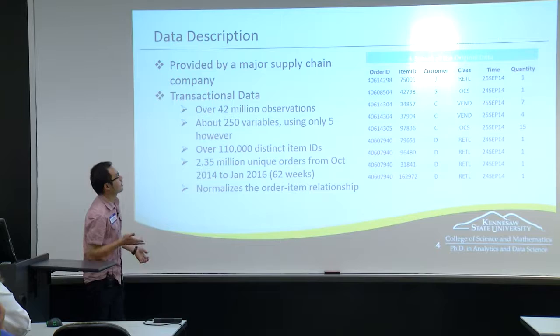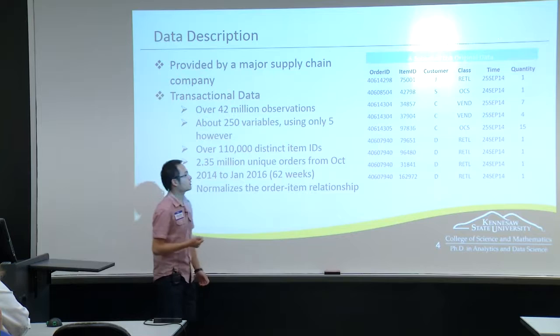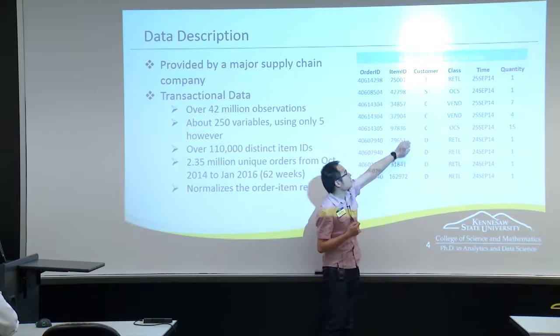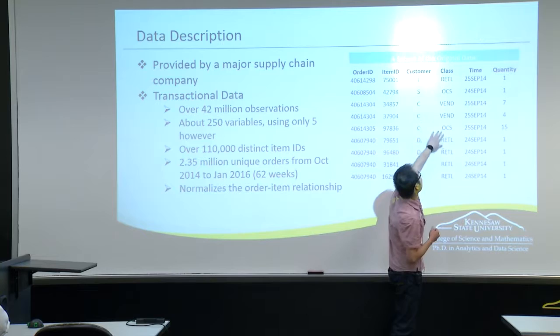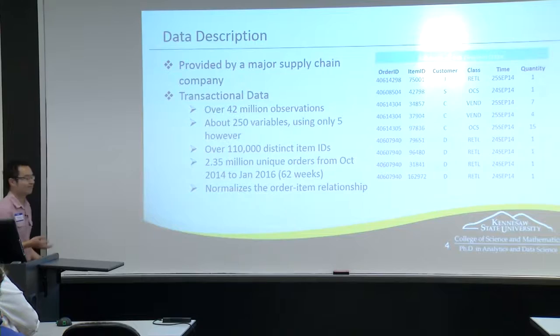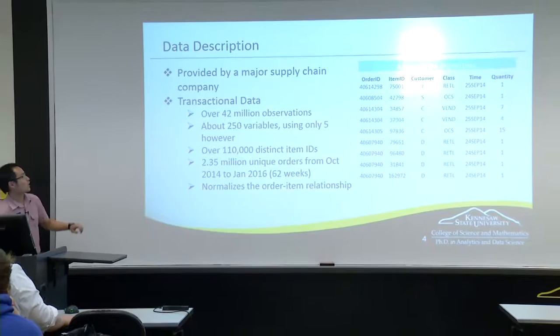A little about the data: it was provided by the client. It has about 42 million observations from 2014 to January 2016. The most important variables are the order ID, which represents one order from a customer; item ID, which represents one unique item; the customer name, which I had to hide; the class such as retailer or vendor; the time; and the quantity. Most of my project involved transforming the data into the required format, which was quite painful and long.